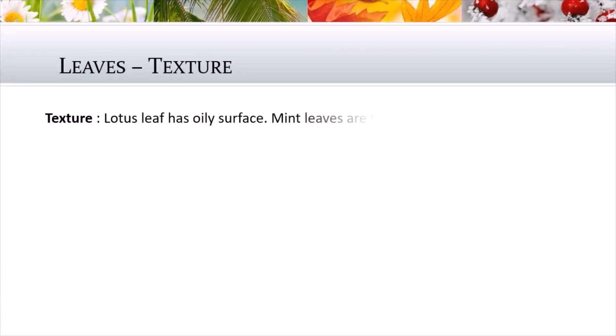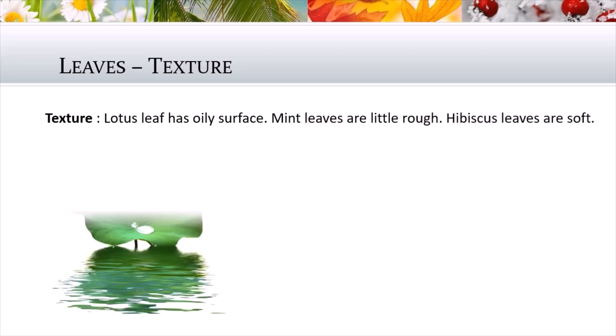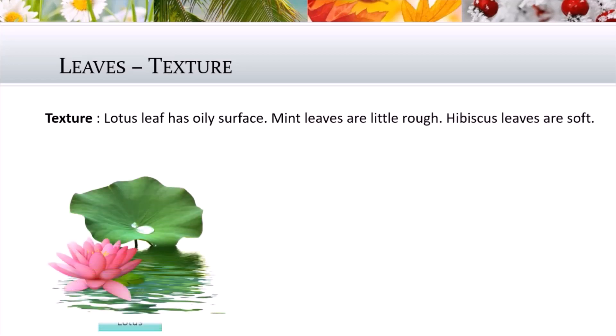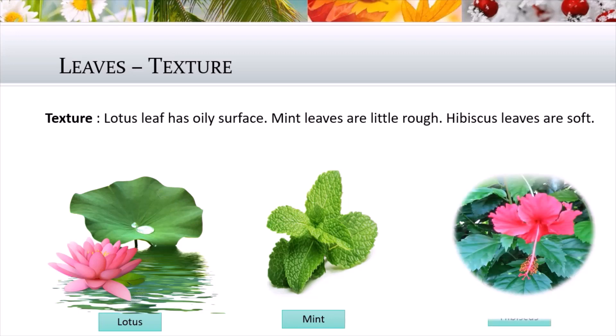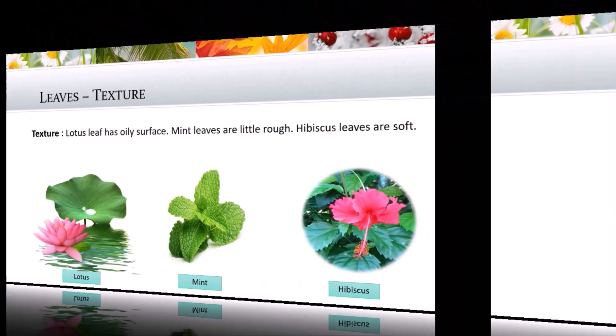Leaves vary in texture as well. Lotus leaf has a waxy surface. Mint leaves are a little rough, but hibiscus leaves are soft.